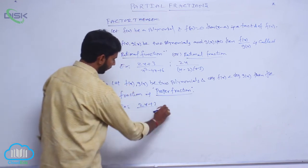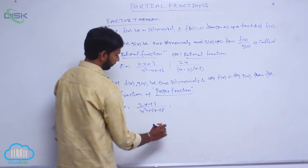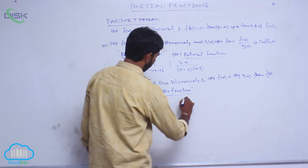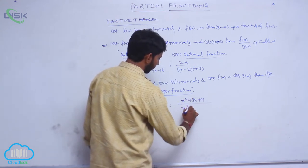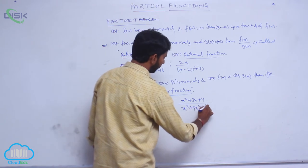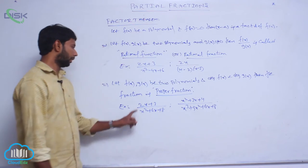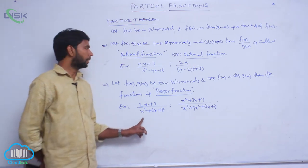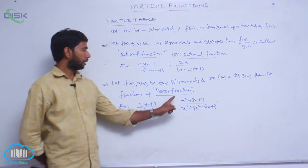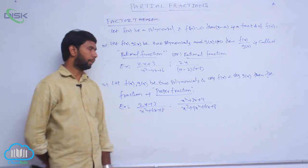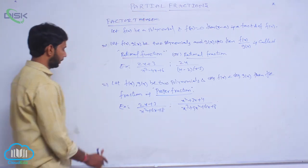Examples: 2x plus 3 by x squared plus 6x plus 8, or x squared plus 3x plus 4 by x cubed plus 9x squared plus 6x plus 8. Here the degree of the numerator is 1 and degree of denominator is 2, and in the second example the degree of numerator is 2 and degree of denominator is 3. In both cases, degree of f of x is less than degree of g of x.